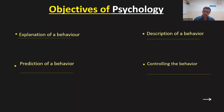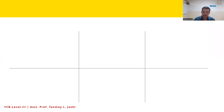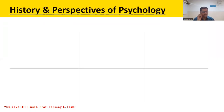After discussing origin of psychology, the definition, and objectives, let us start with the history of psychology and its perspectives. Understanding the history of any field is essential because this study helps us to understand what work has been done so far in that particular field. It has also been said that without a canvas, we cannot paint a picture. So understanding the history helps you to understand the depth of that particular subject.